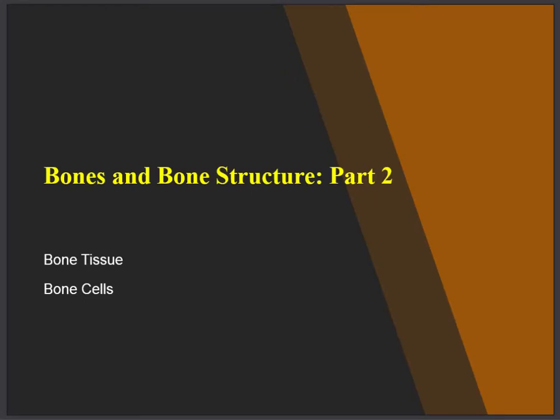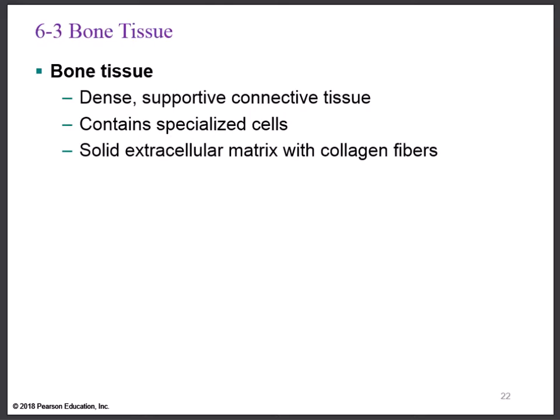In part two of Bones and Bone Structure, we'll take a look at the anatomy of bone tissue and the various bone cells that make up bone. Bone tissue is actually a connective tissue — classified as a dense support connective tissue. It contains four specialized cells: the osteogenic cell, the osteoblast, the osteocyte, and the osteoclast.